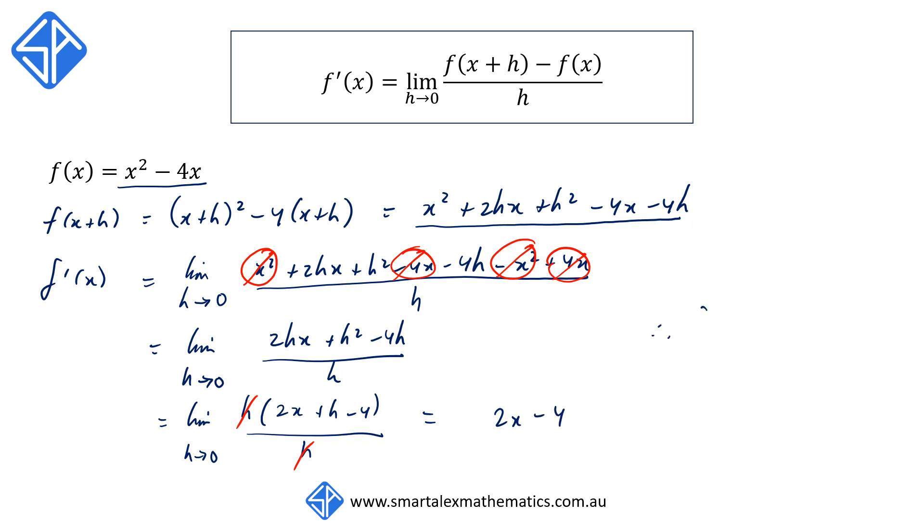Therefore, given f(x) = x² - 4x, the derivative function f'(x) = 2x - 4.